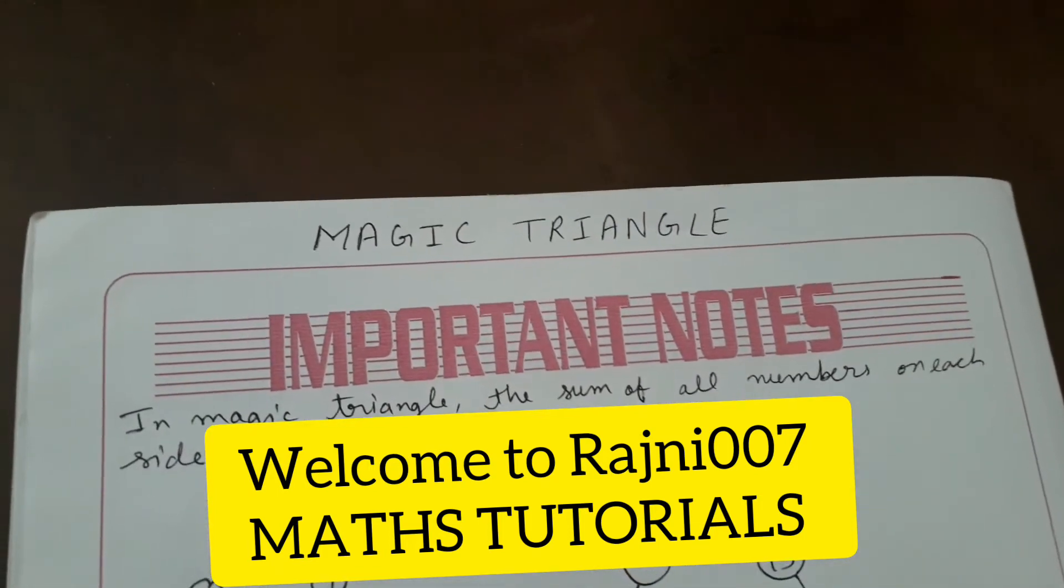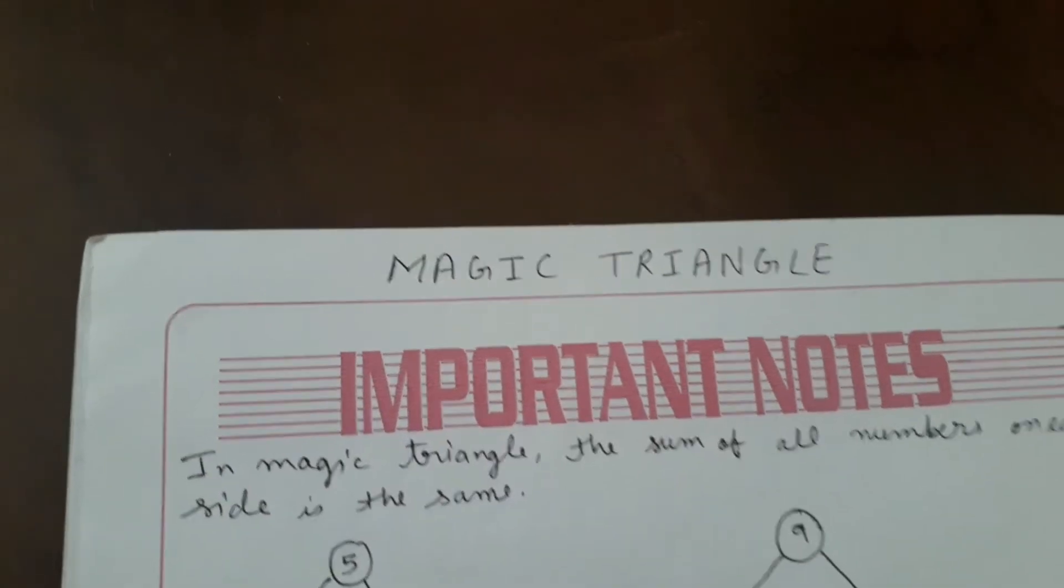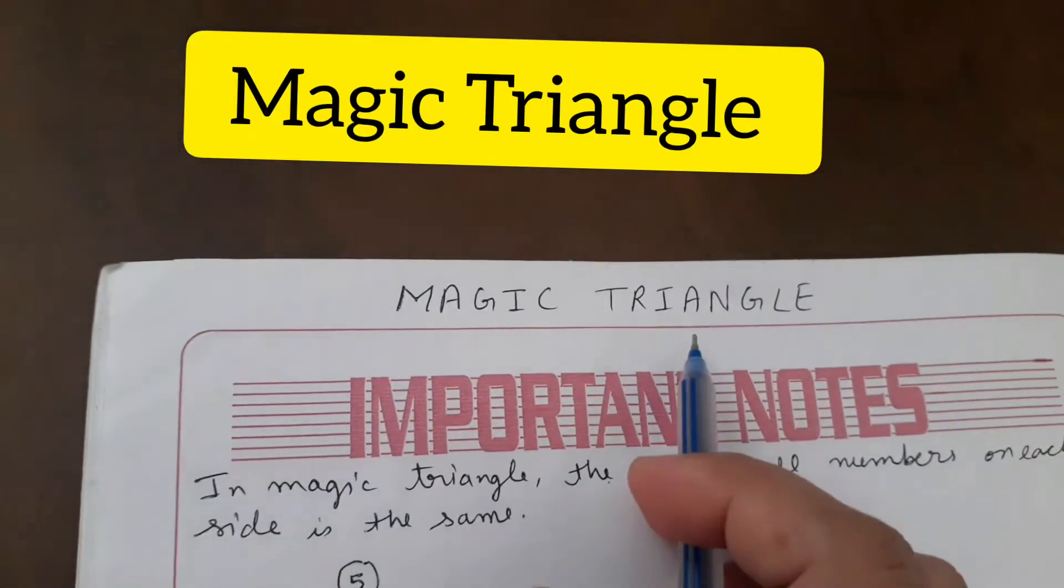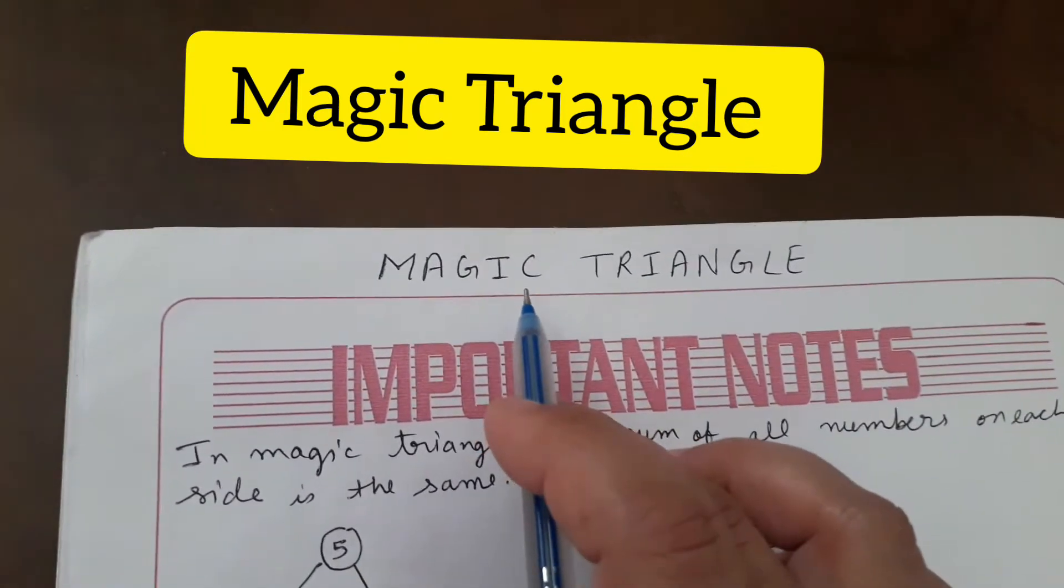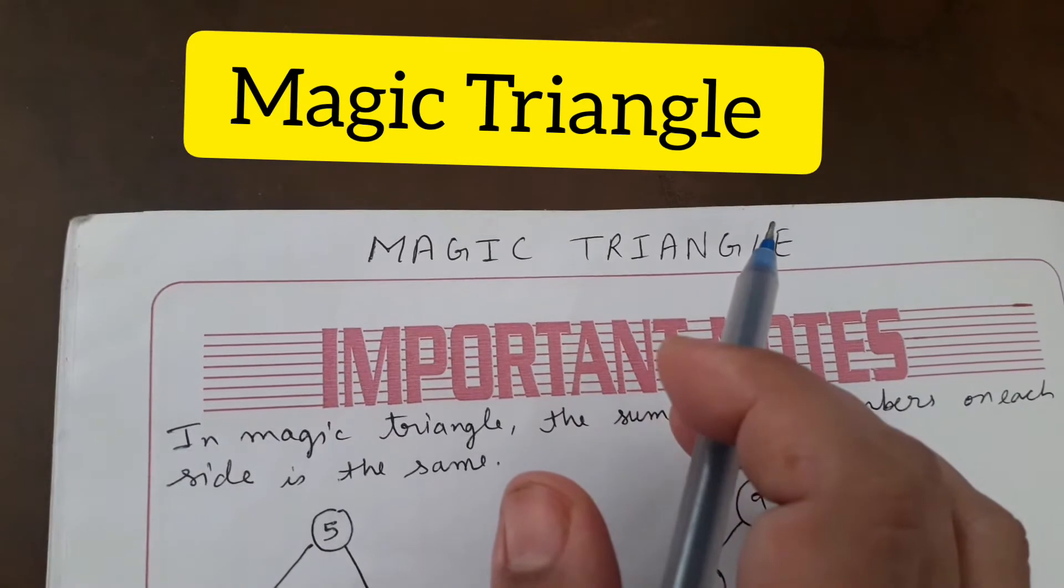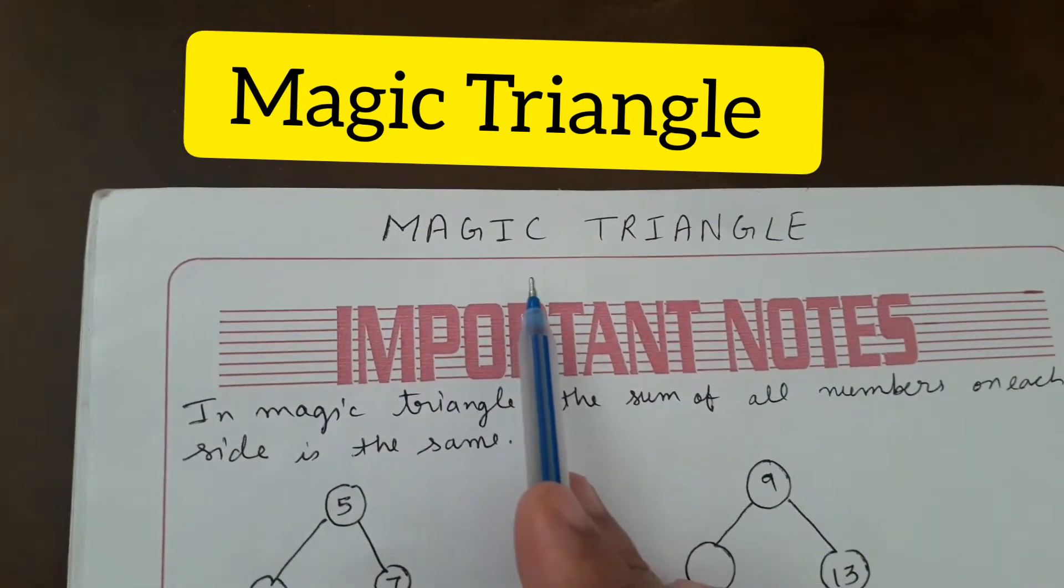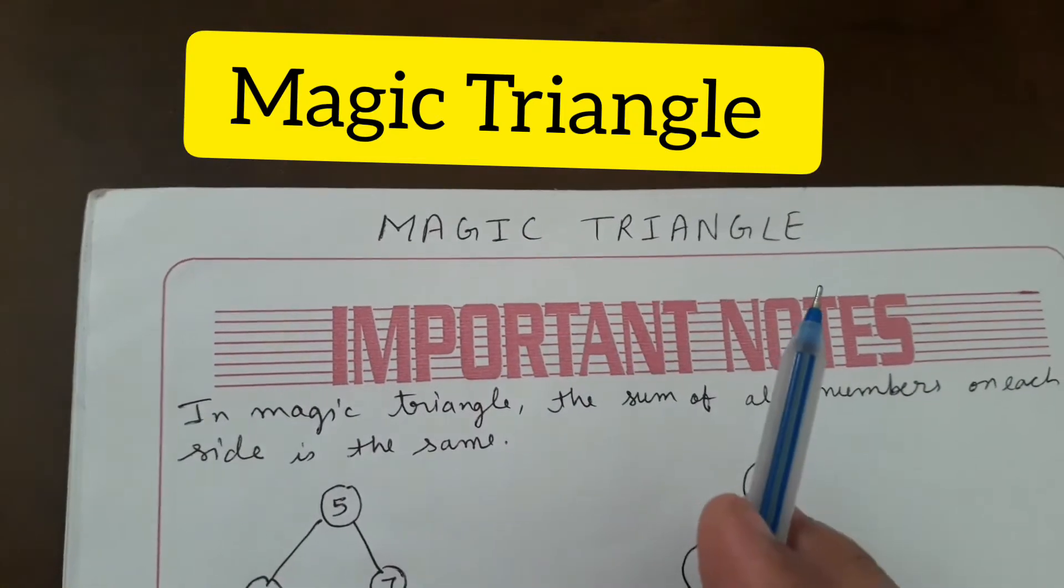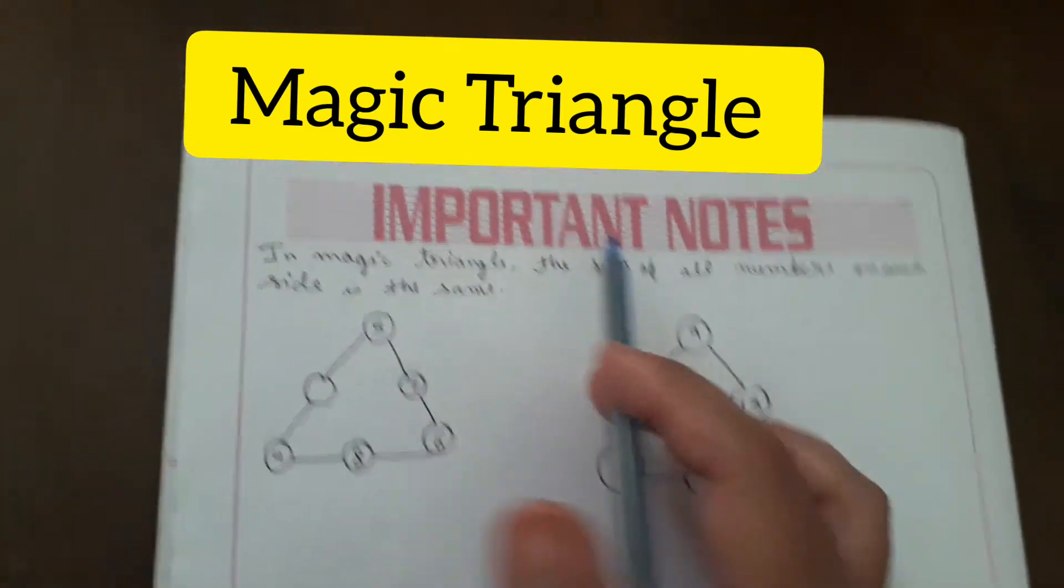Hello friends, welcome to Rezni 007 math tutorial. Today I'm going to discuss magic triangle. It comes under the chapter pattern. First topic: magic triangle for fifth or sixth grade - how to make a magic triangle or how to find the missing number in a triangle.